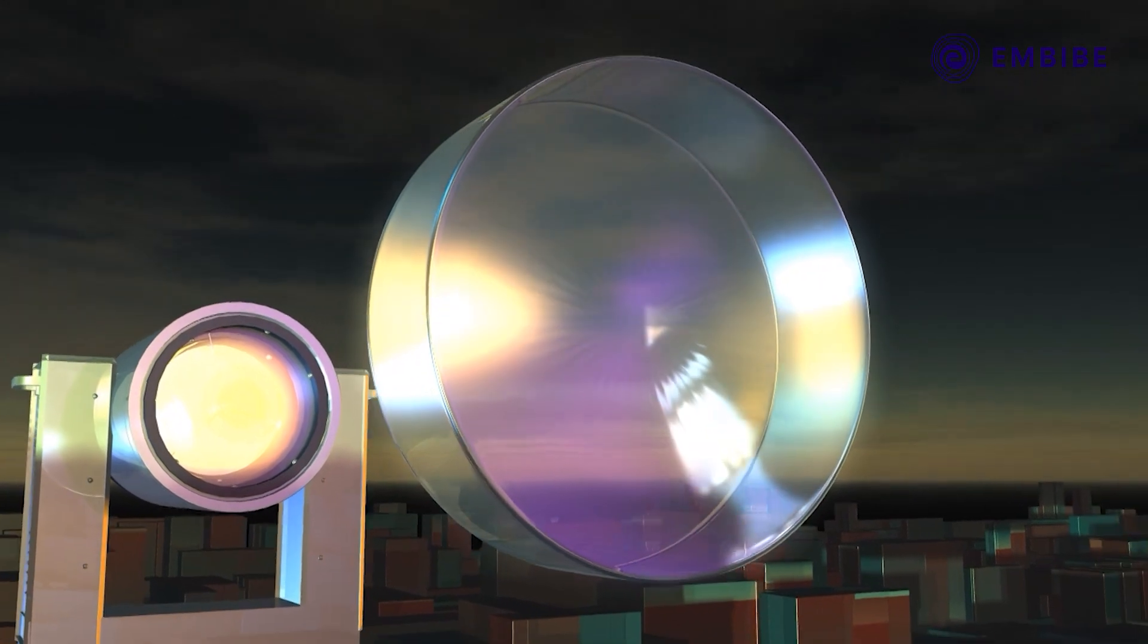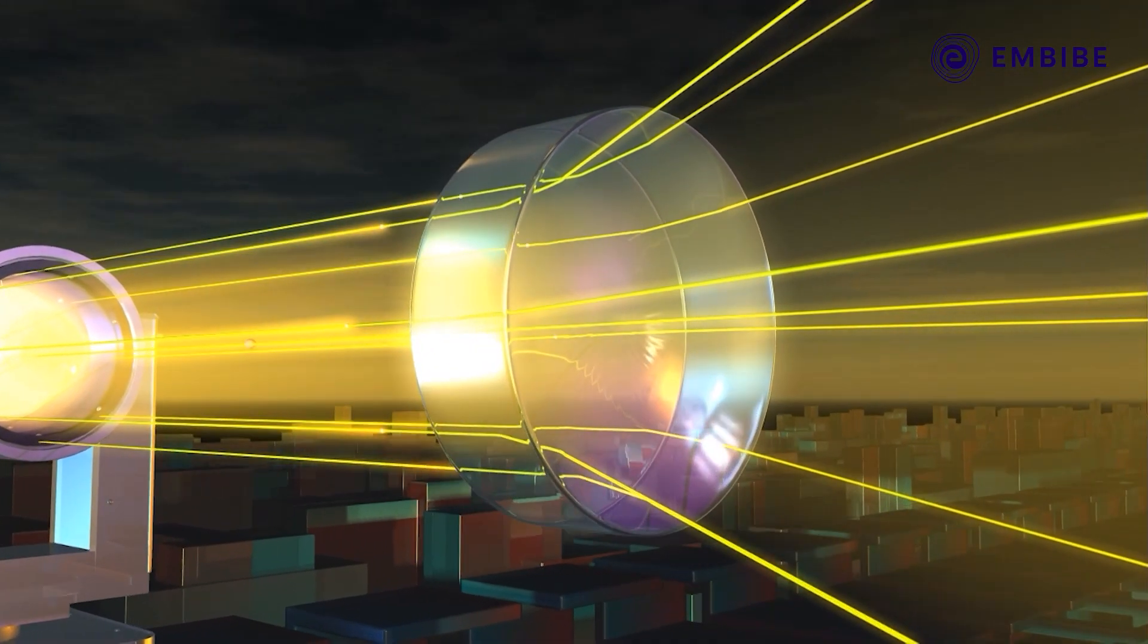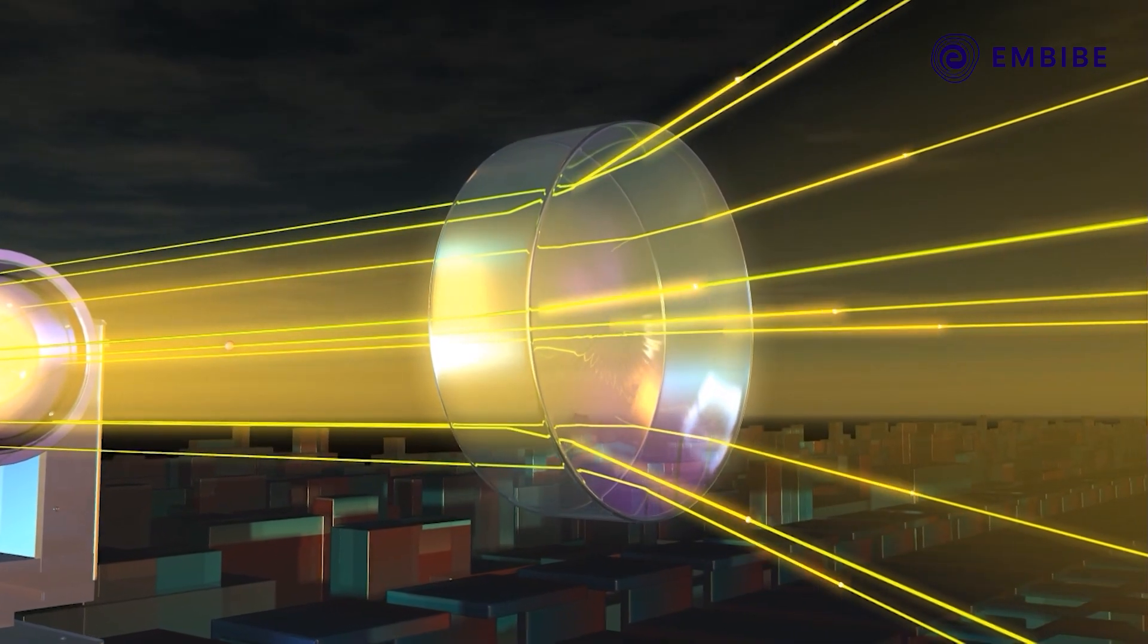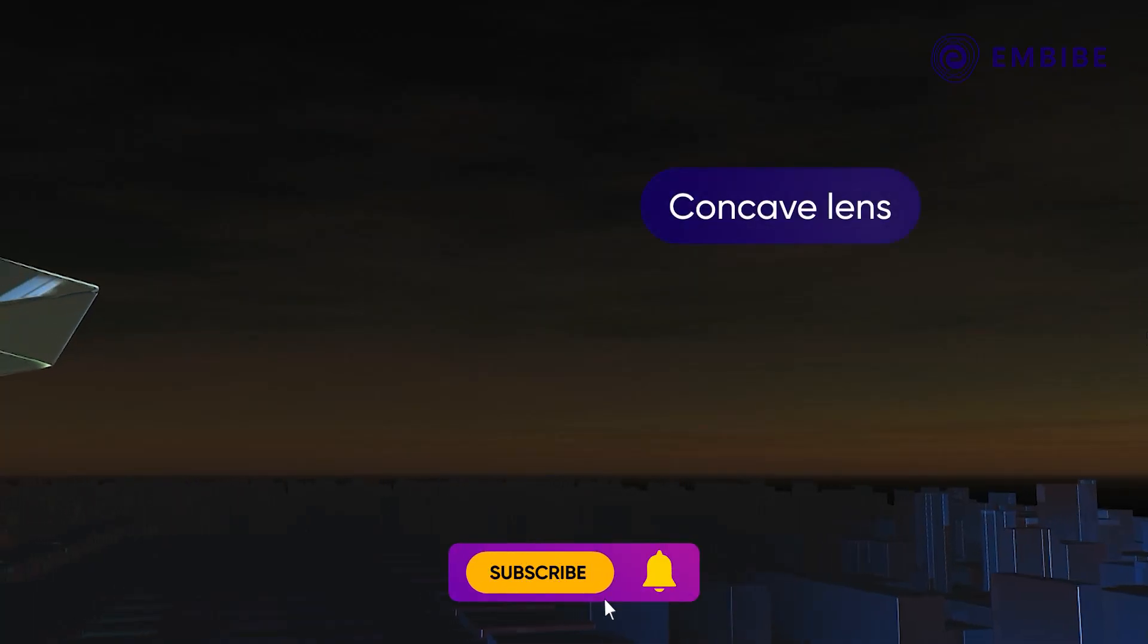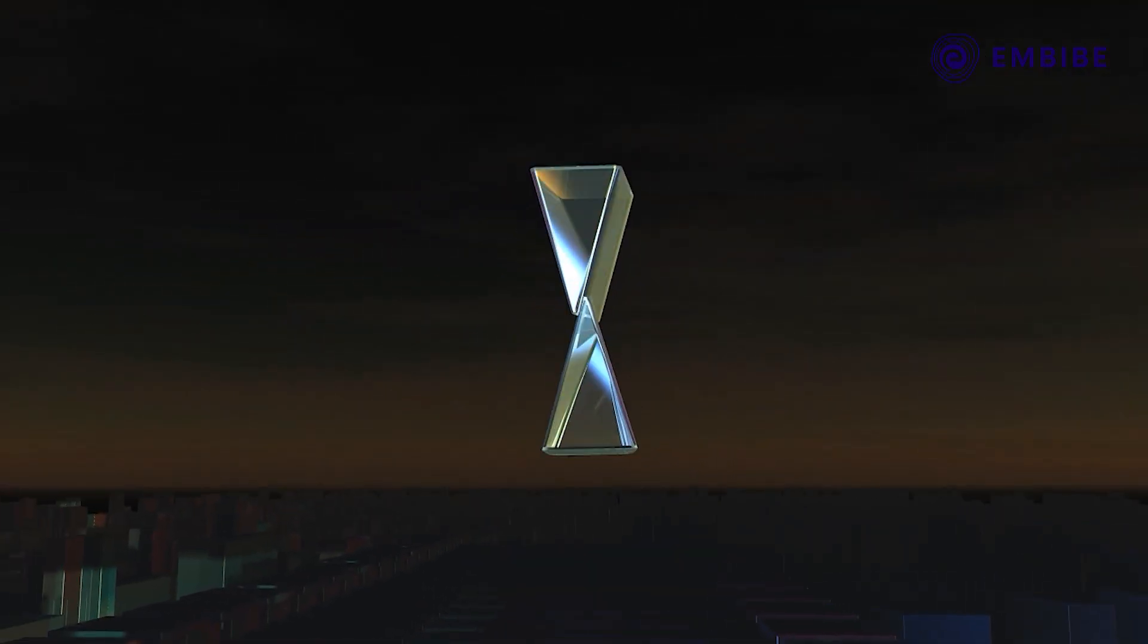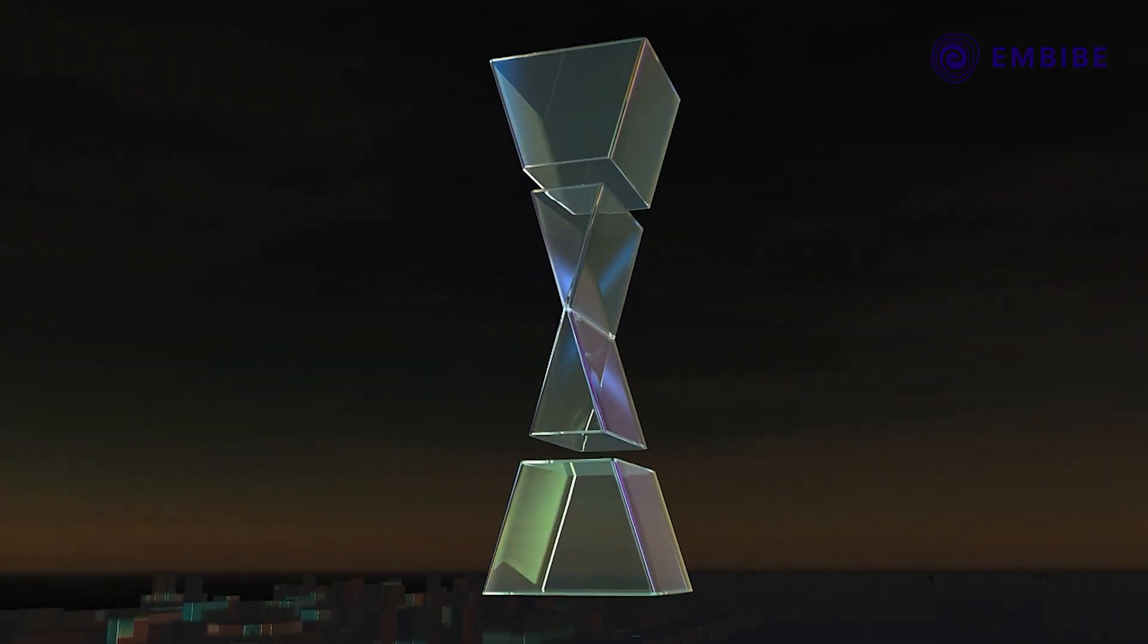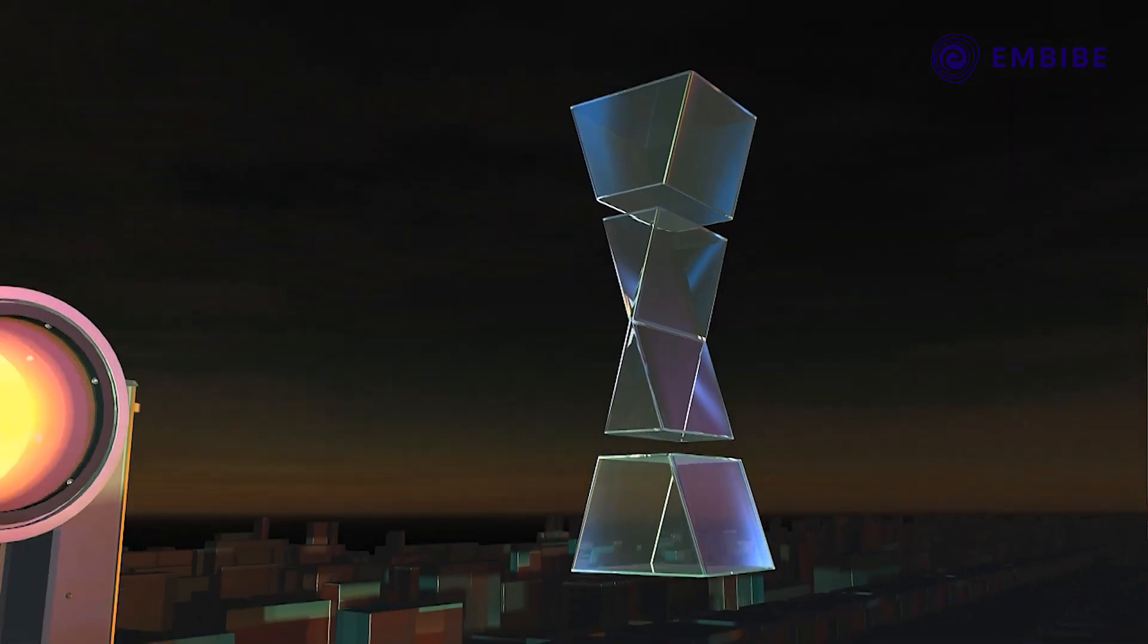Let us look at another kind of lens, which diverges the light rays passing through it. Concave lens. Place two prisms with their vertices in contact and arrange a few slabs of rectangular prisms beside each of them.